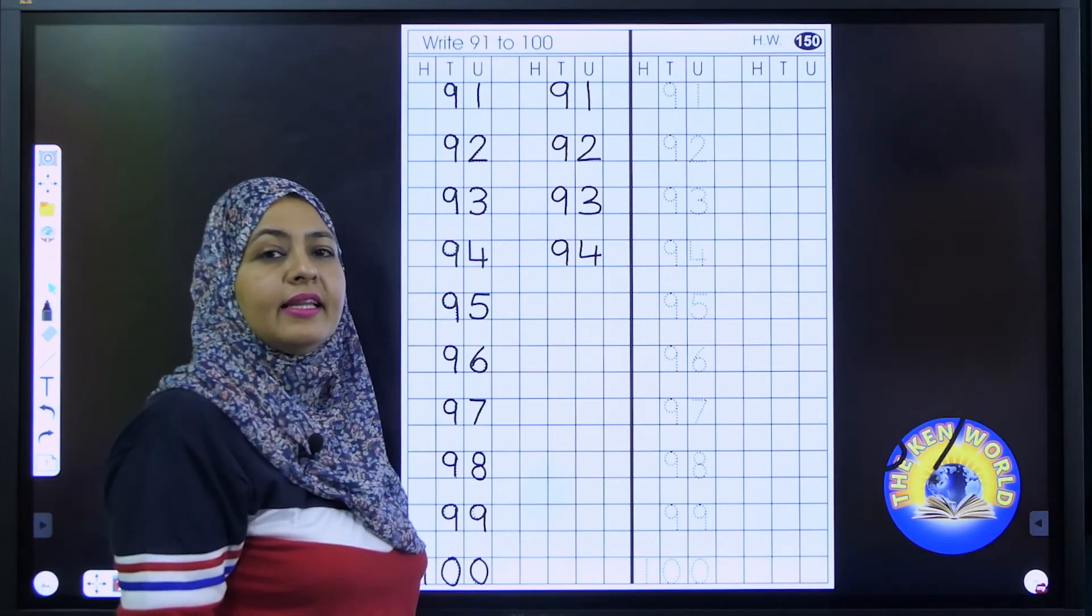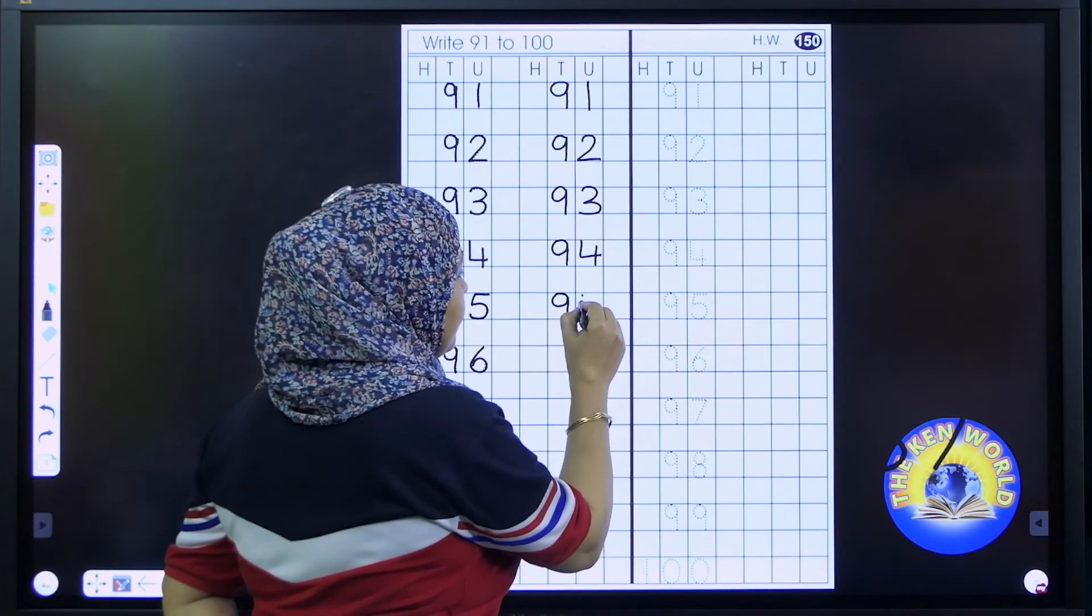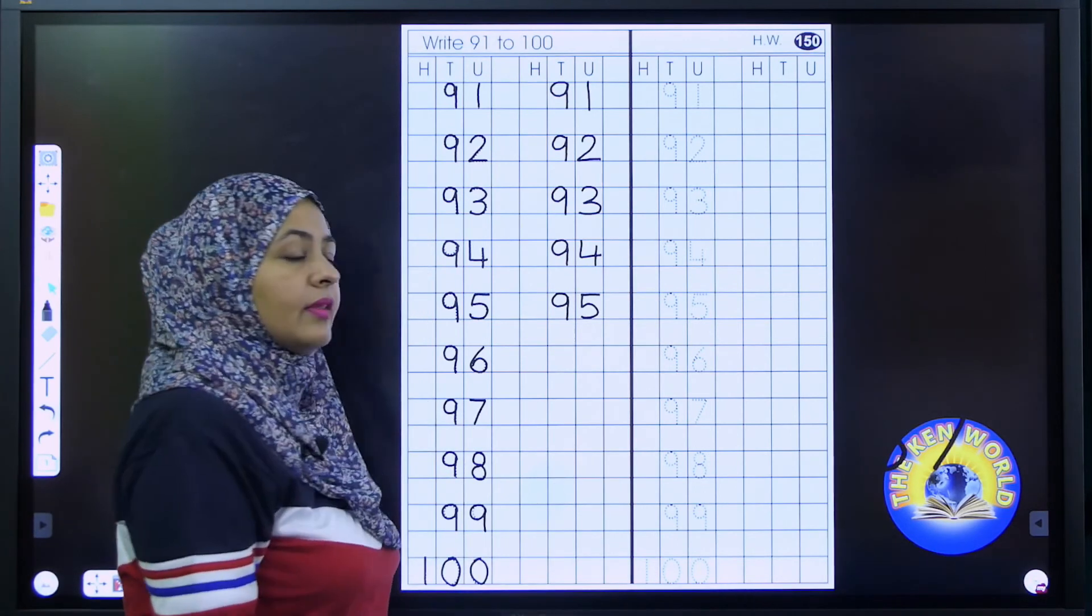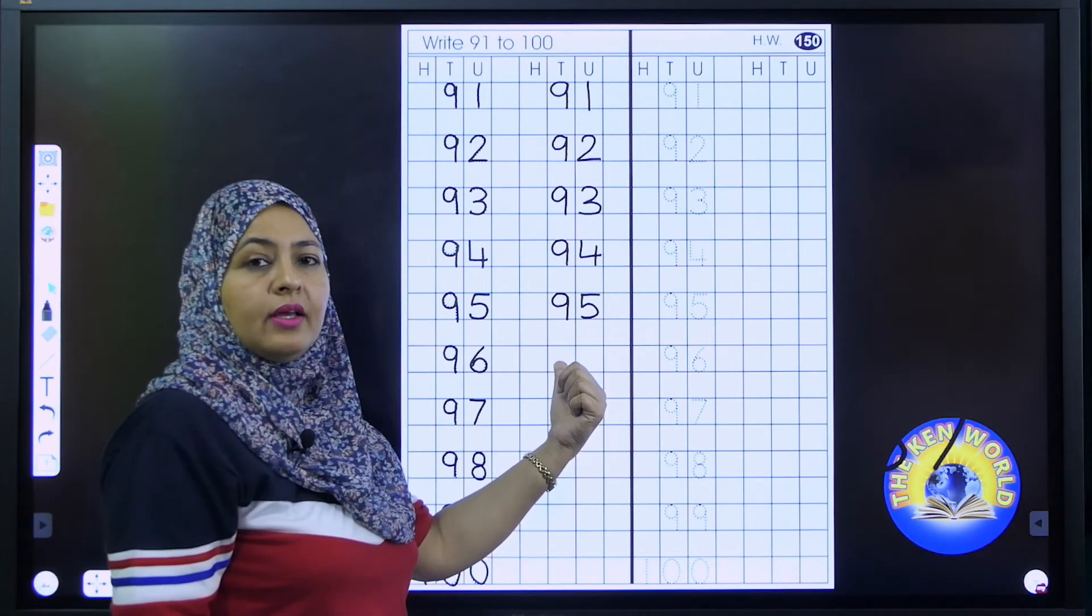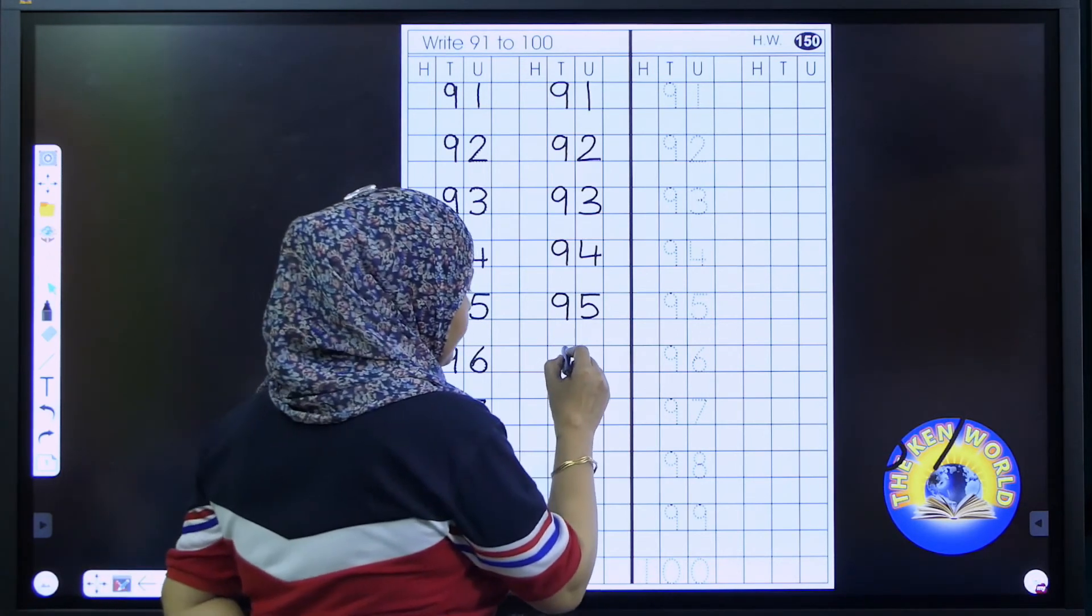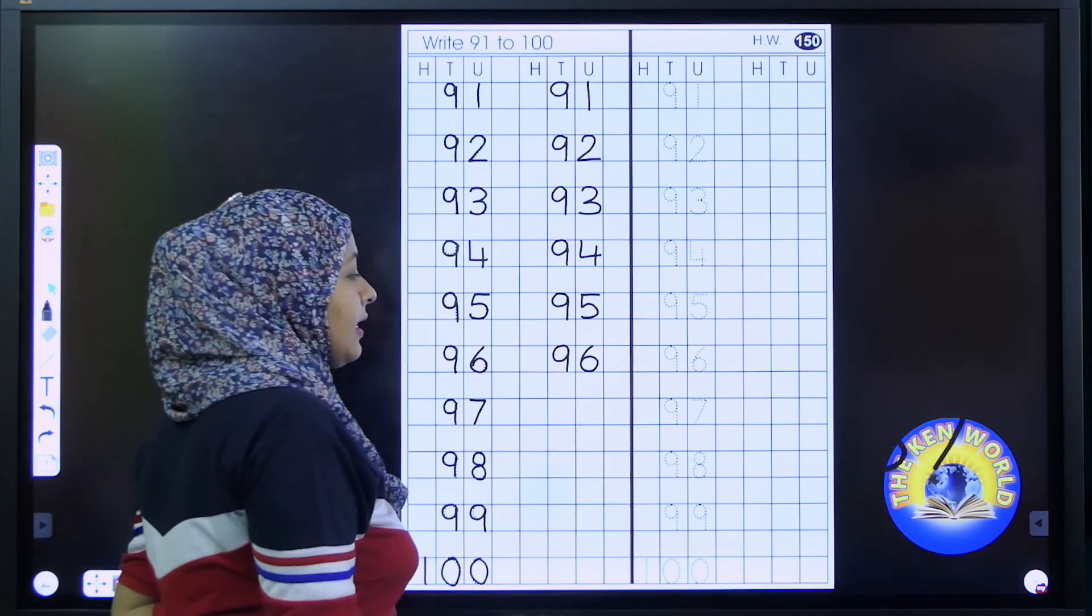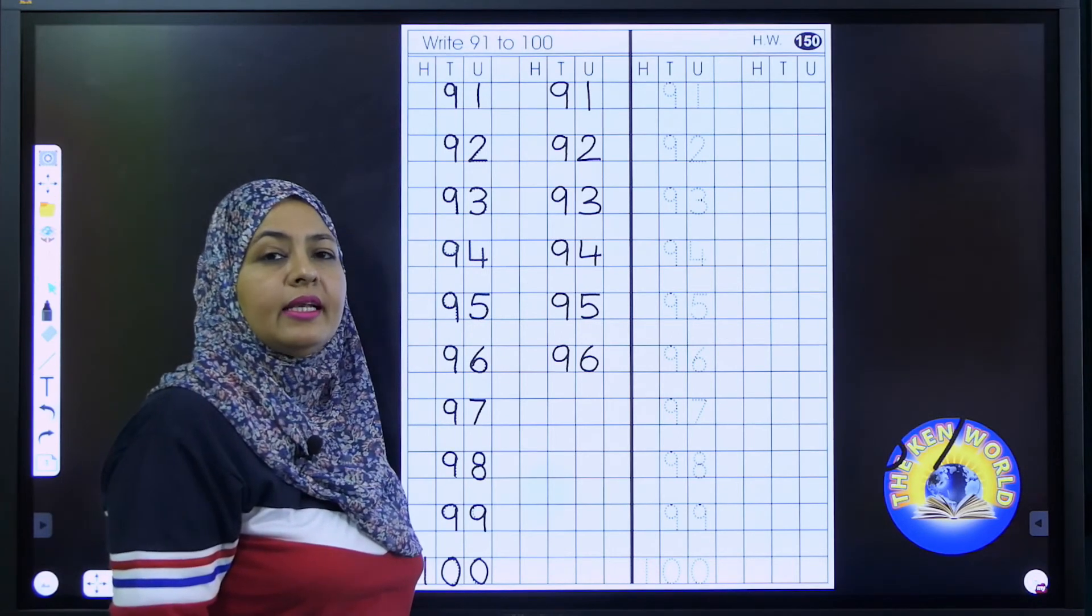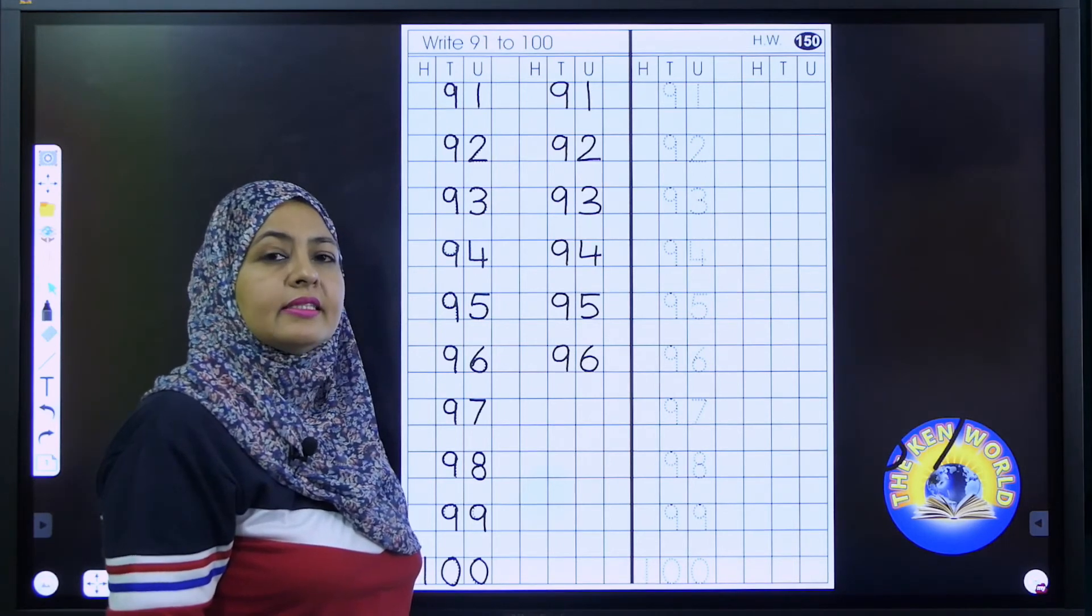95. 95. 95. 96. 96. 96. Speak loudly and tell me the next number. That is, yes, 97.